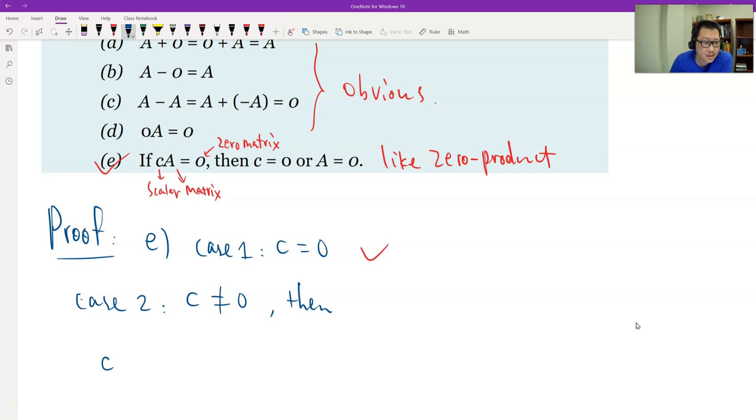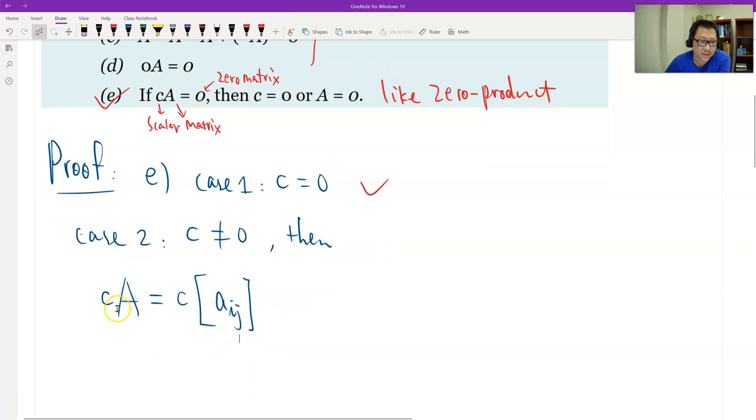C times A, A I J. I will not specify the size of the matrix. Whatever the general entry of the matrix is, it's A I J. And by the definition C, go inside all the entries. So each entry should be C times A I J. That makes sense, right?